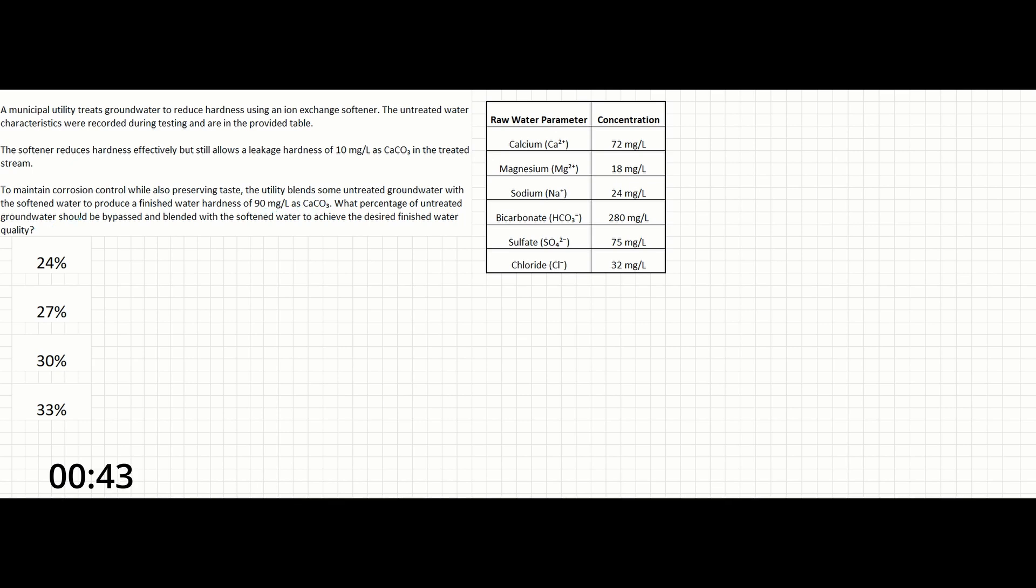What percentage of untreated groundwater should be bypassed and blended with the softened water to achieve the desired finished water quality? The possible percentages are 24%, 27%, 30%, and 33%.